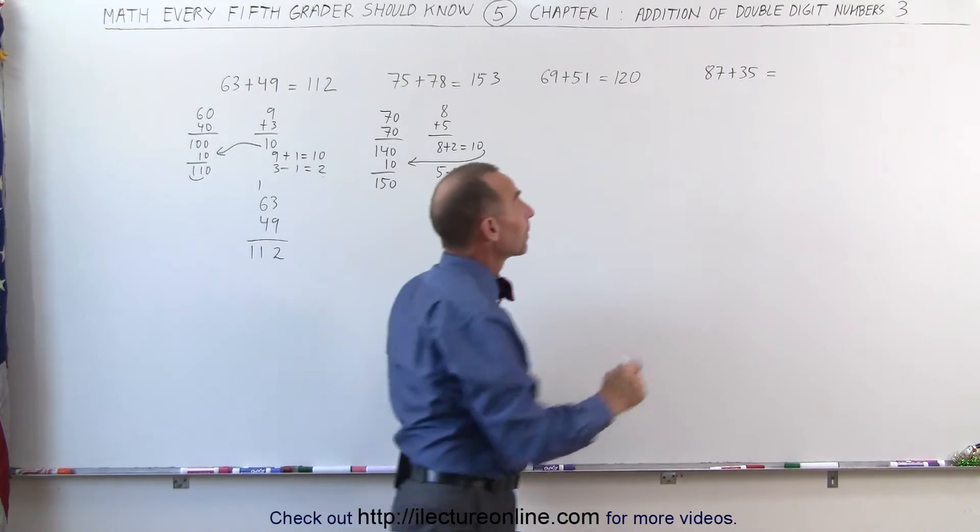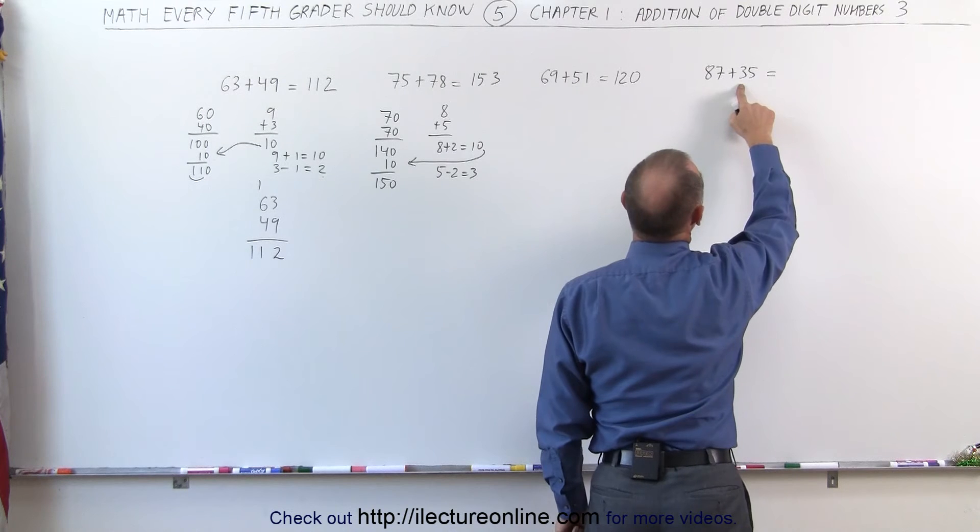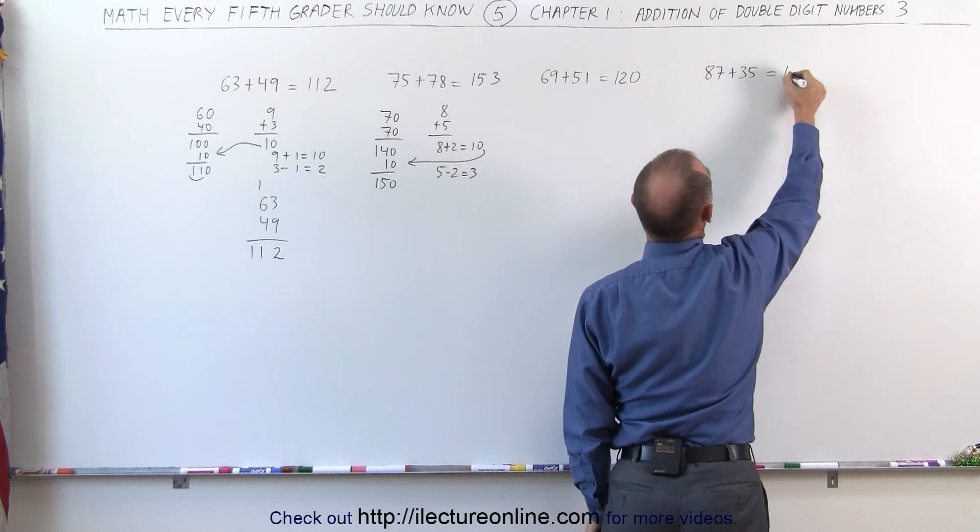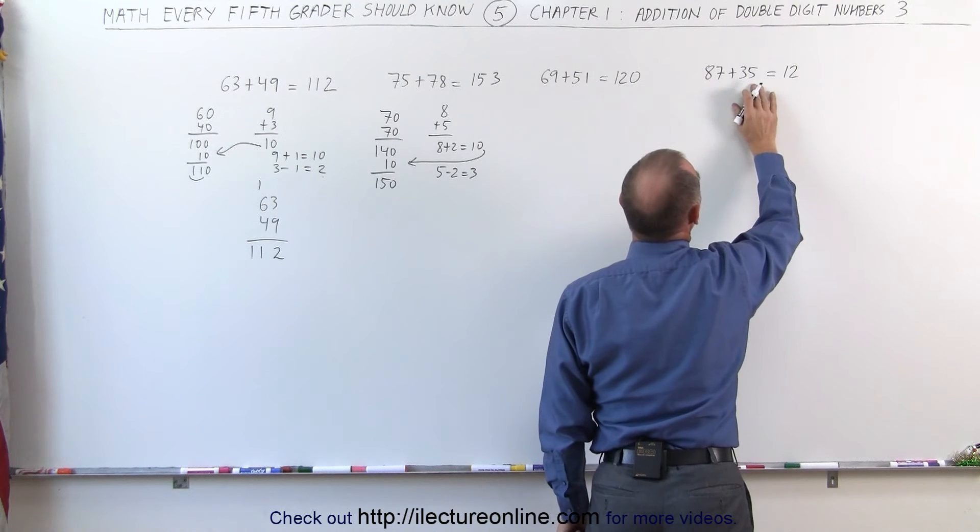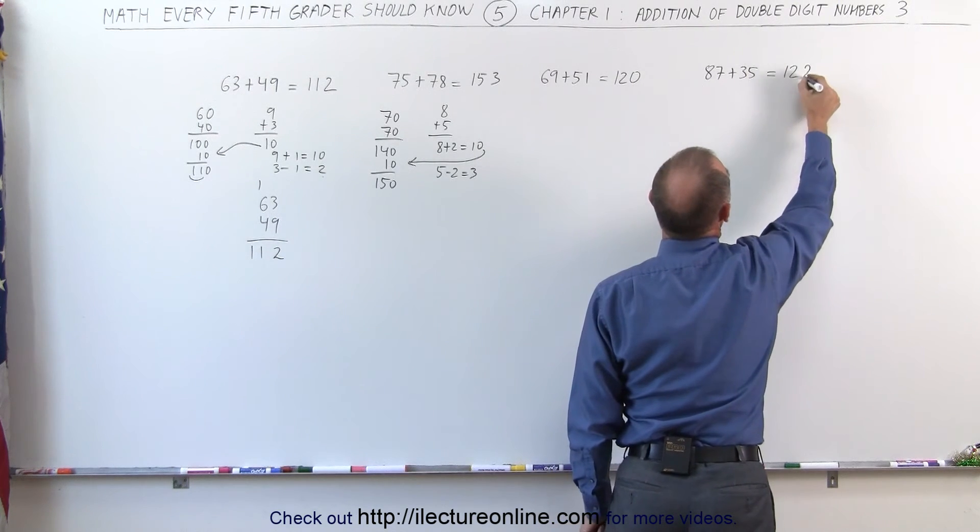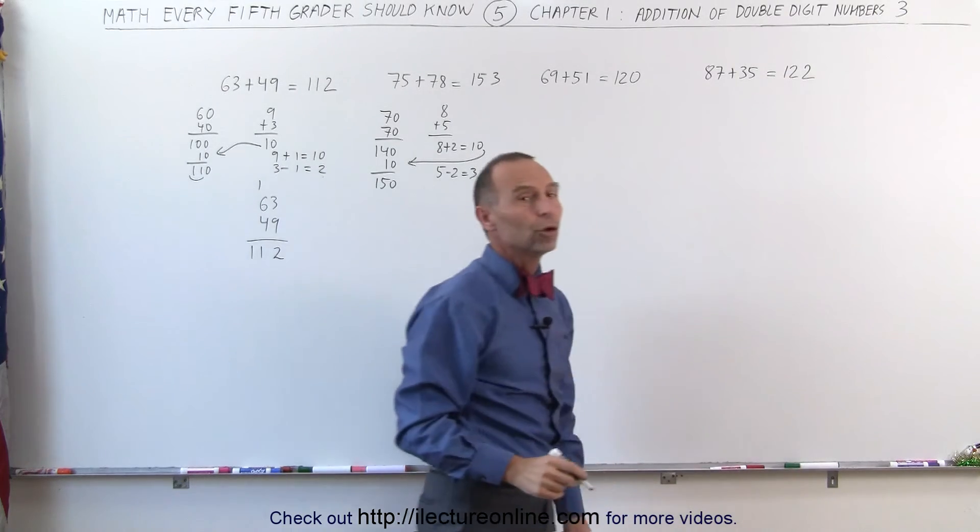Let's try it again on that number. 8 plus 3 is 11. But since 7 plus 5 is more than 10, I need to add 1 to the 11. It gives me 12. 7 plus 5, that is 12. I already gave 10 away. That leaves me with 2. I add a 2 to that. It gives me 122.